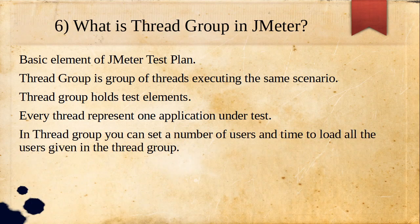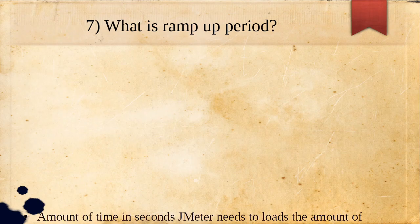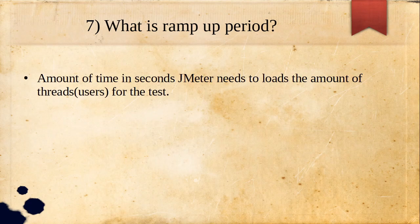Seventh question: what is ramp up period? In a thread group, you can set the number of users and the time to load all the users. Ramp up period is the amount of time in seconds JMeter needs to load the specified number of threads or users for the test. For example, if threads is set to 10 and ramp up period is 10 seconds, JMeter will load all 10 users within 10 seconds — that duration is the ramp up period.